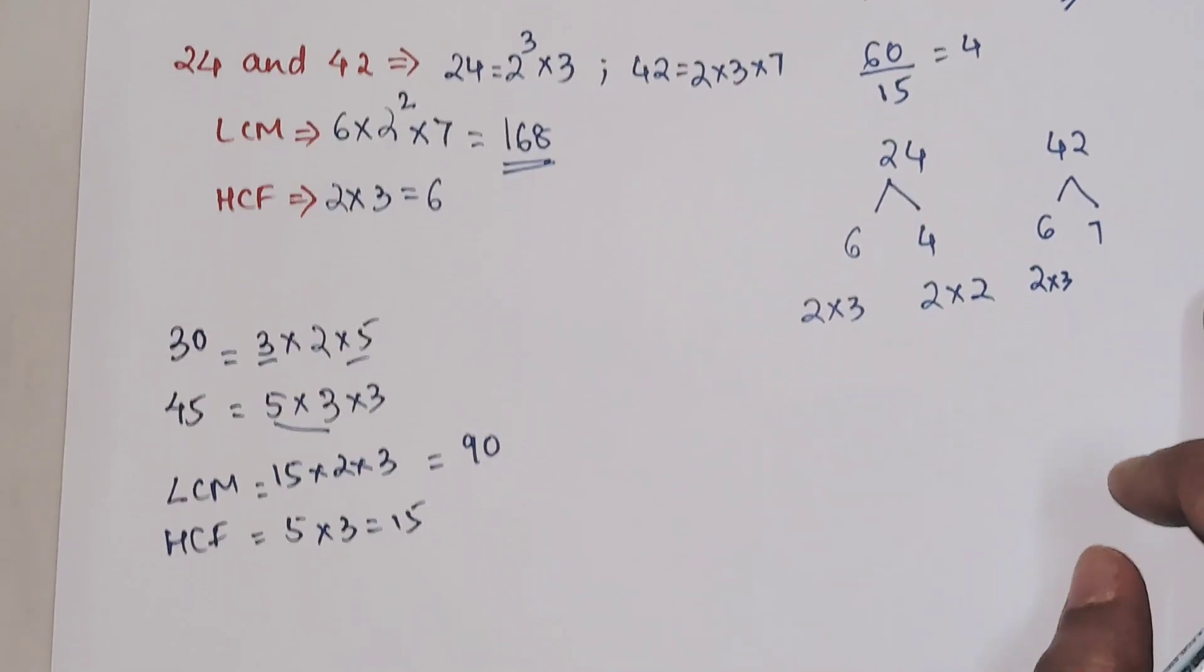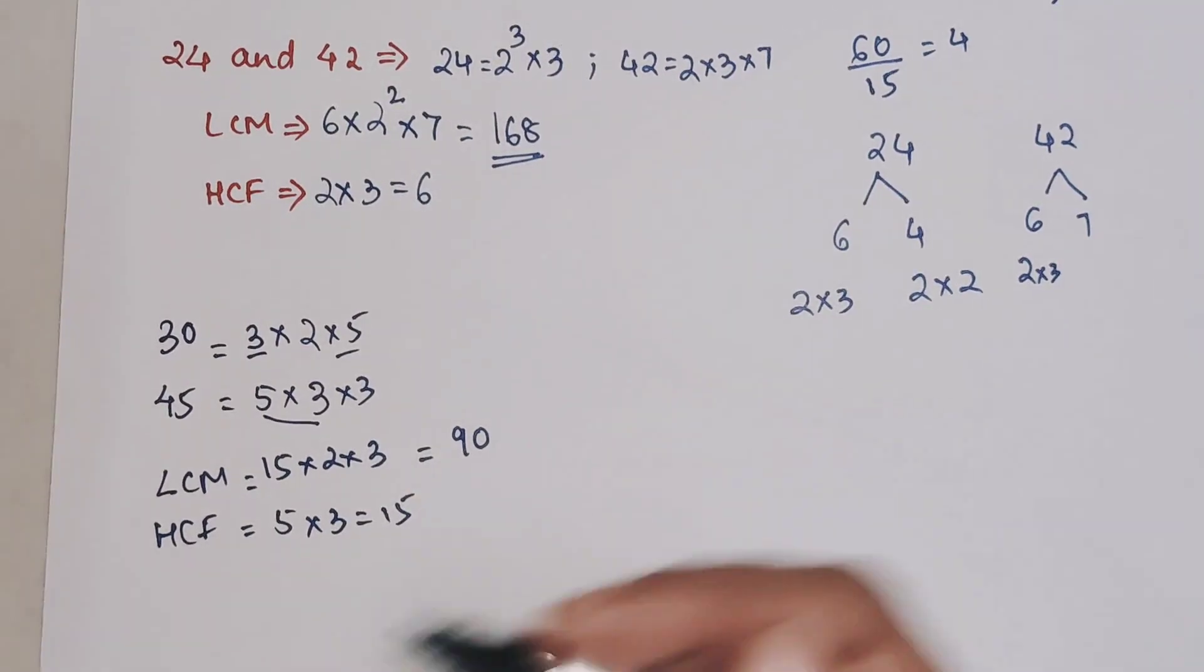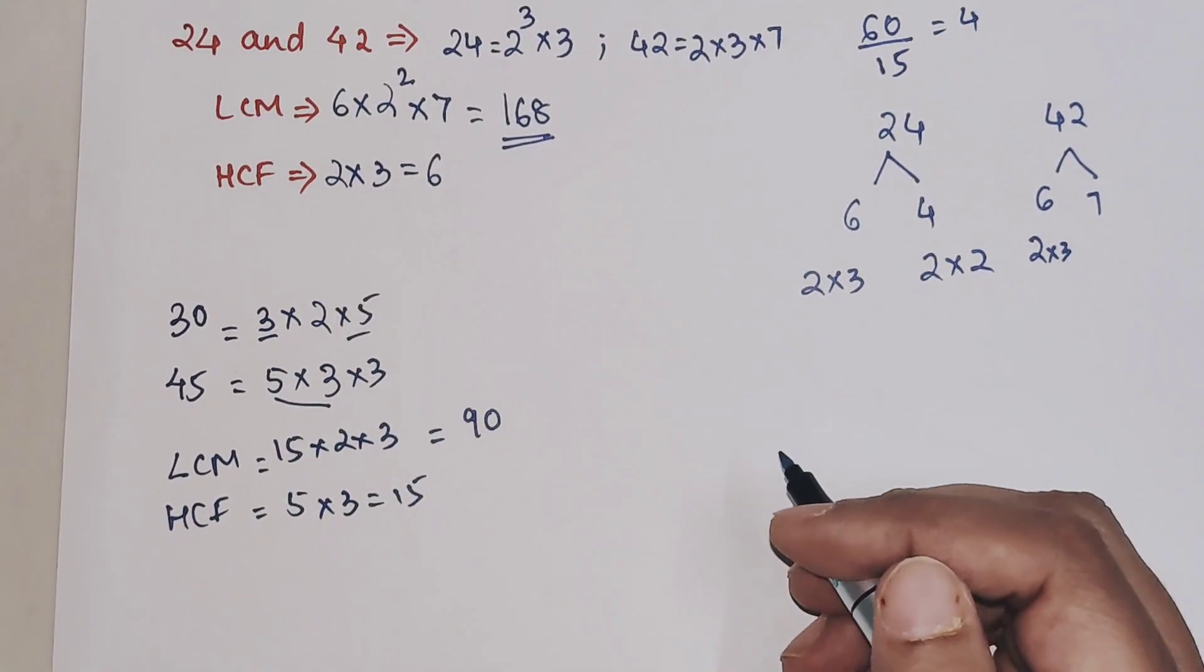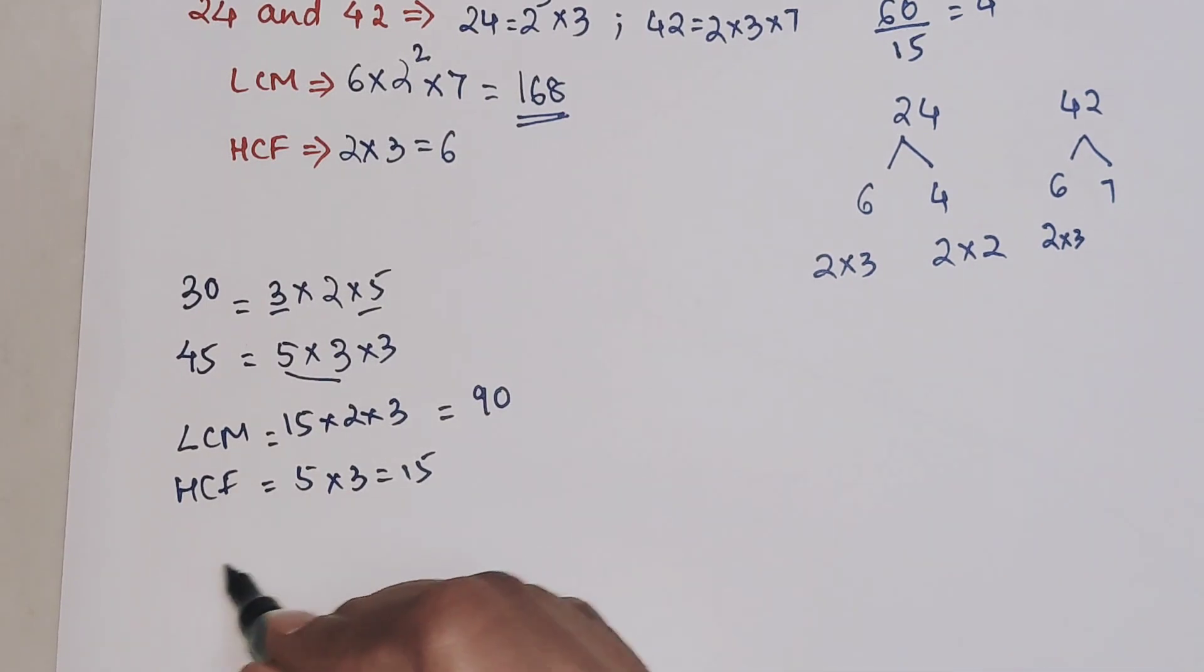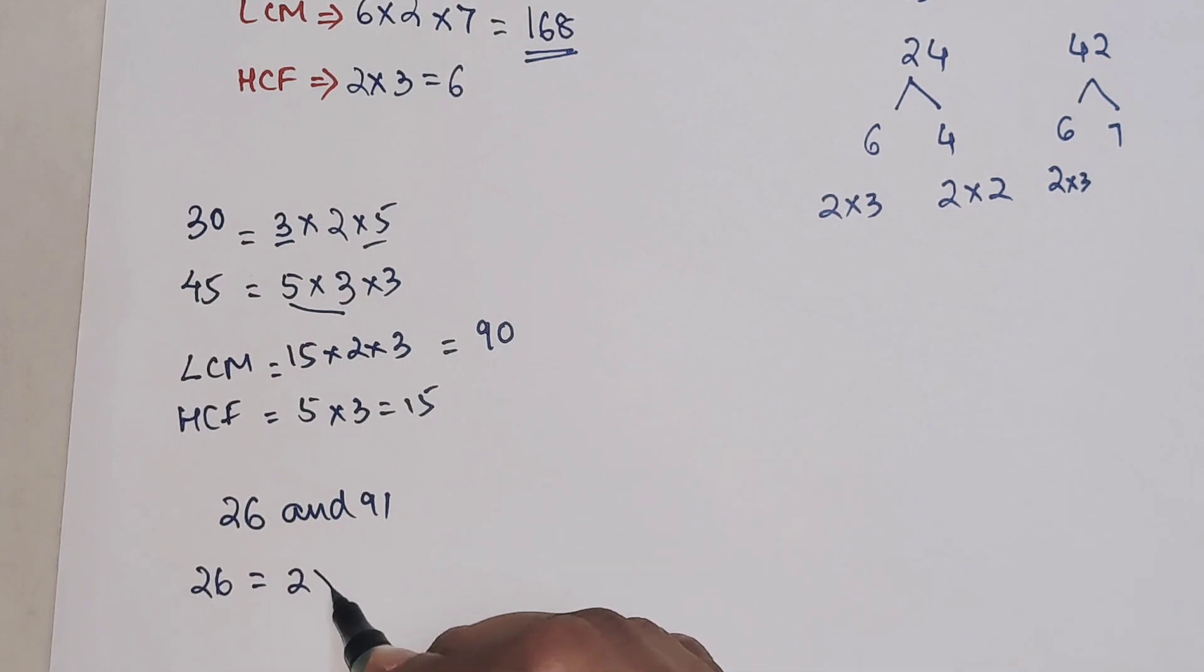Now let's take more numbers. But before beginning with that, there are times when you come across something like 26 and 91. Your 26 can be written as 2 into 13, because it's an even number so it will be divided by 2.